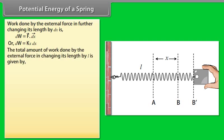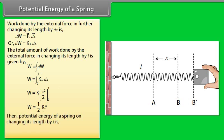Now the total amount of work done by the external force in changing its length by L is given by W = integration of dW. By calculating it, we get W = ½kL². Then potential energy of a spring on changing its length by L is potential energy = W, potential energy = ½kL².